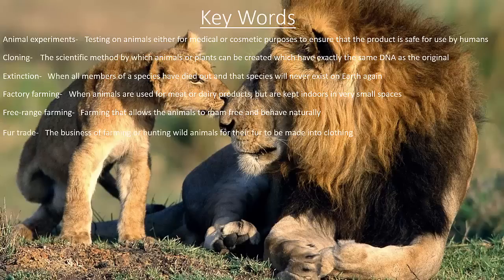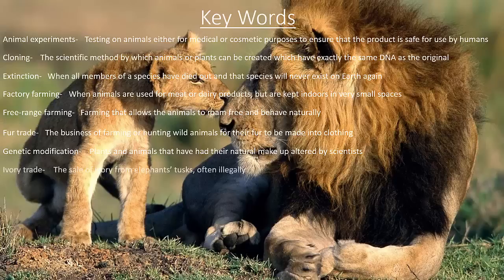Fur Trade — the business of farming or hunting wild animals for their fur to be made into clothing. Genetic Modification — plants and animals that have had their natural makeup altered by scientists. Ivory Trade — the sale of ivory from elephants' tusks, often illegally.